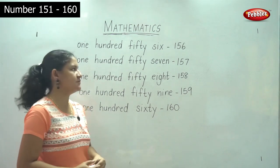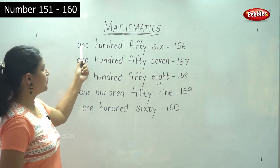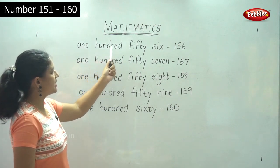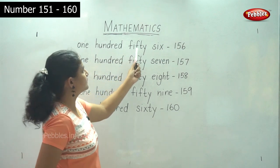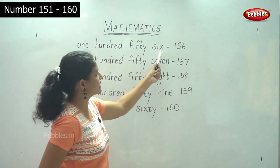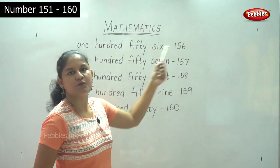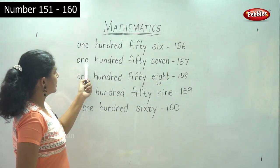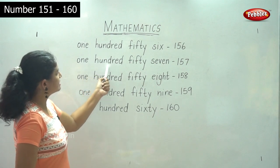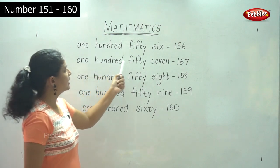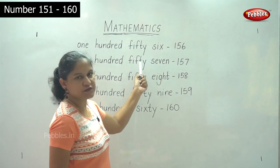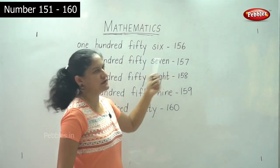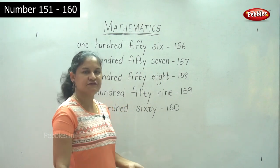Shall we do this once more? O-N-E H-U-N-D-R-E-D F-I-F-T-Y S-I-X — 156. O-N-E H-U-N-D-R-E-D F-I-F-T-Y S-E-V-E-N — 157.